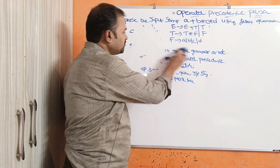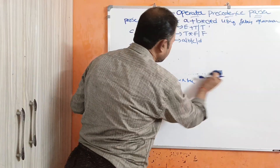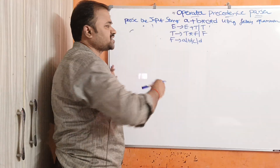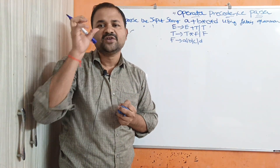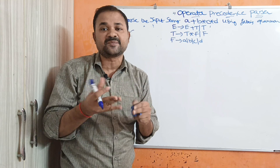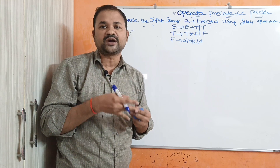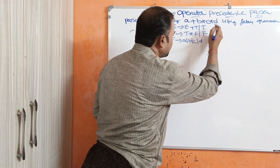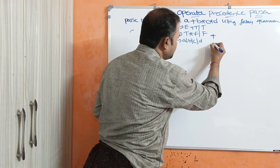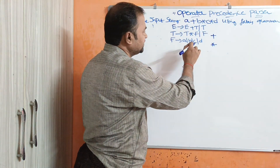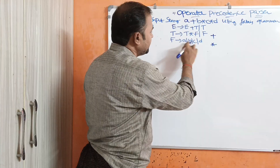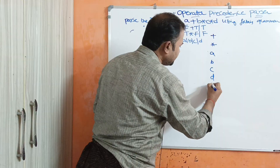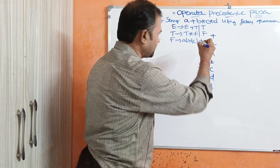Now let us see the problem. Step 1: the given grammar is operator grammar. Step 2: we need to construct the operator precedence relation table. To construct this table, we take the terminals: plus, star, and A, B, C, D are terminal symbols. The string ends with dollar, so we write dollar as well. We write these terminals in both the row side and the column side: plus, star, A, B, C, D, dollar.